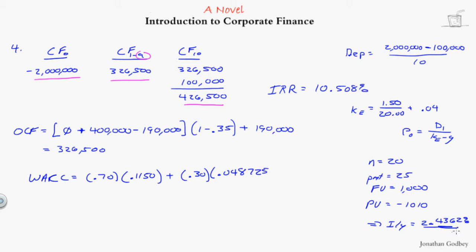I would put in here 0.048725. There's a little rounding issues here. I did this straight out of Excel. Multiply by 1 minus my tax rate. This gives me a weighted average cost of capital of exactly 9%.